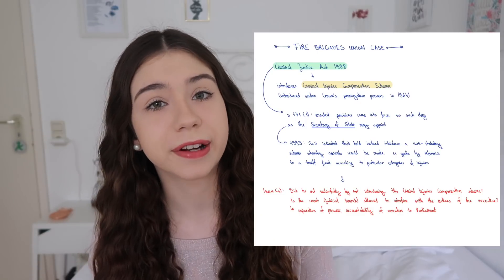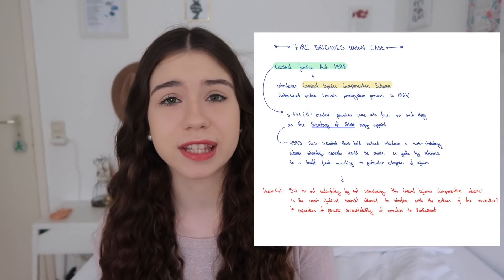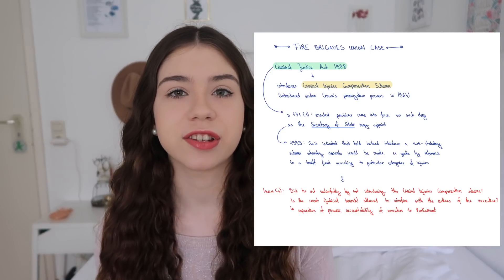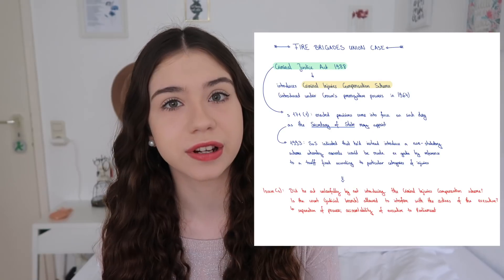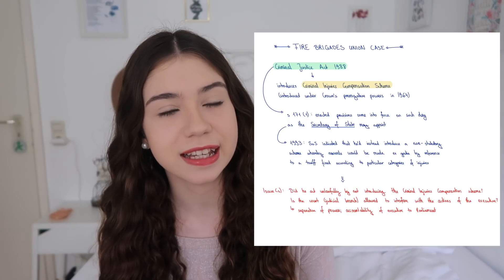Here's the little diagram I drew for the Fire Brigades Union case. It's really simple — this is the legislation, this is what the legislation introduced, this is the power the Secretary of State received, this is what the Secretary of State actually did, and these are the two issues created. It's a useful summary of the main facts and issues. You can always look back at it when you get lost in the details and decide where those details belong in the bigger scenario.